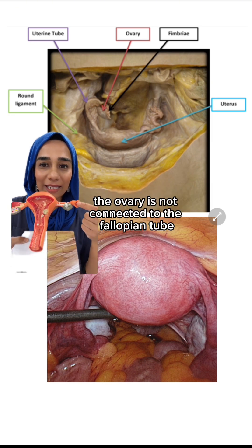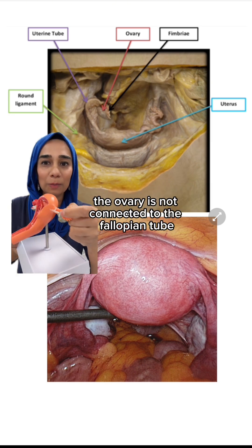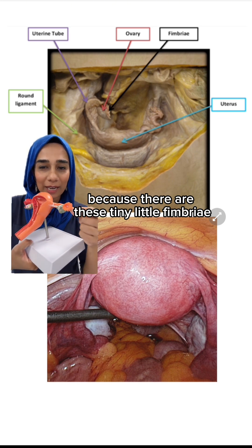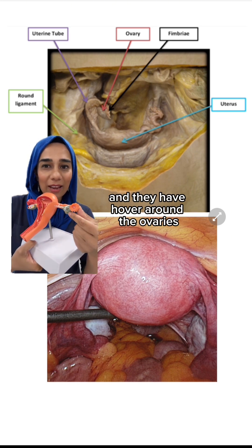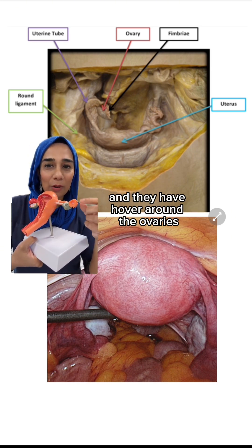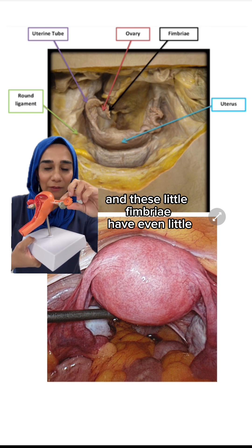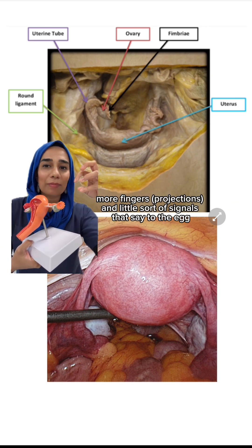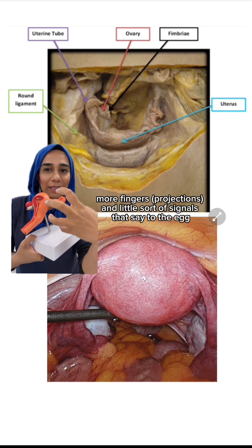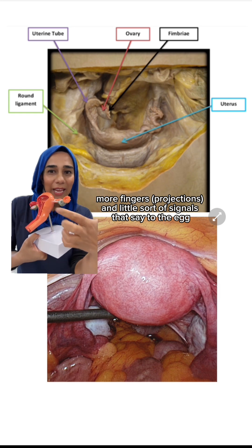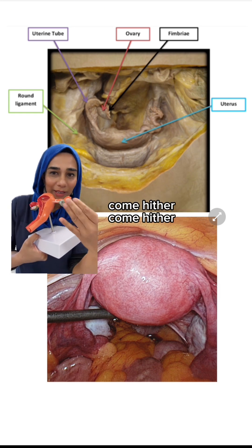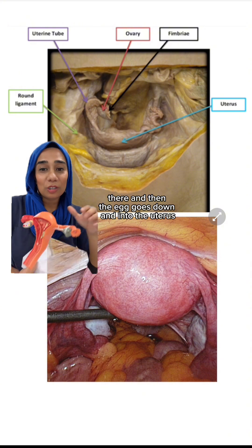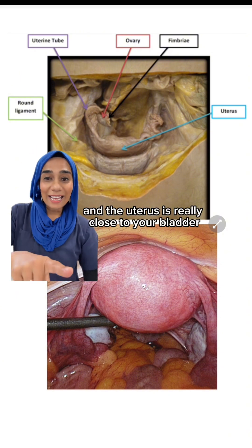This is the clever bit of the anatomy: the ovary is not connected to the fallopian tube. Instead, there are tiny little fimbriae that hover around the ovaries. These fimbriae have even smaller finger-like projections that signal to the egg 'come hither,' and then the egg travels down and into the uterus.